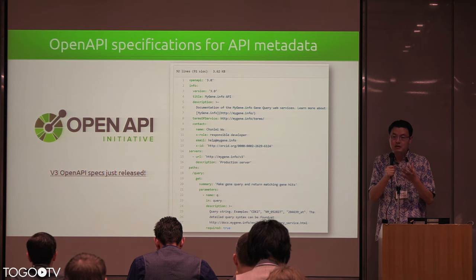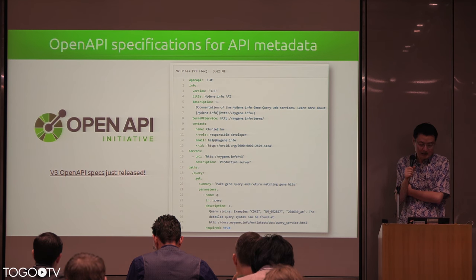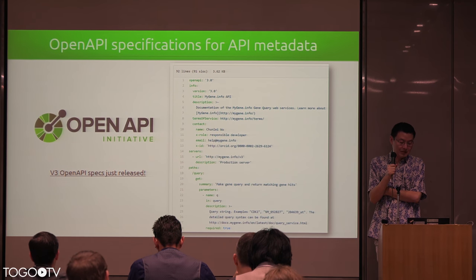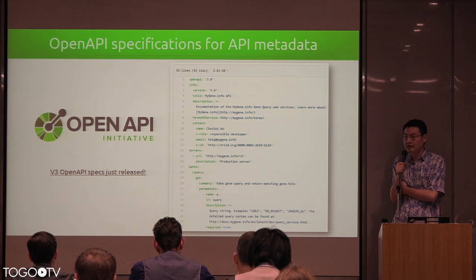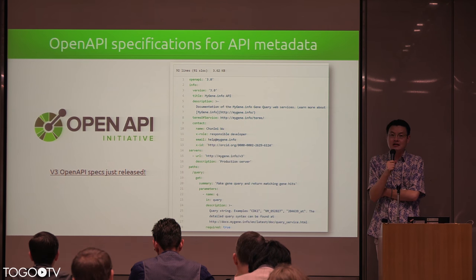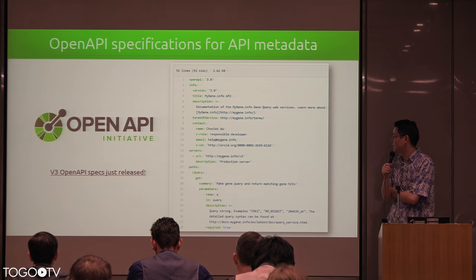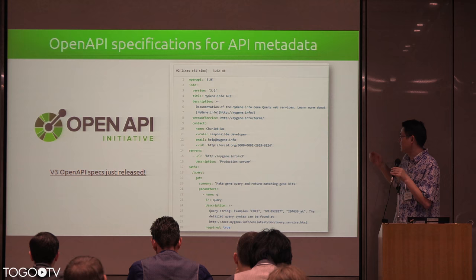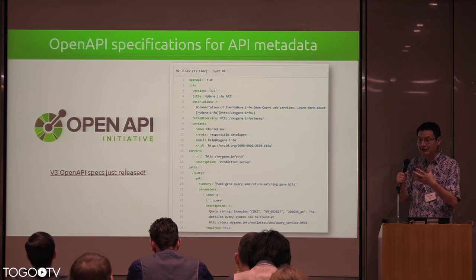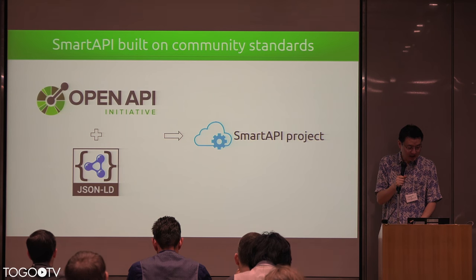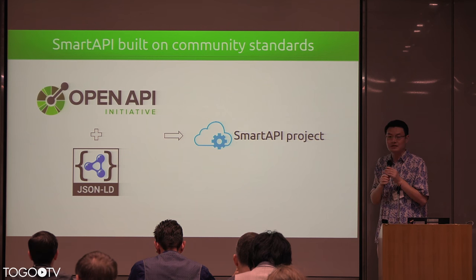The second thing is we want API metadata — telling us how your API is formulated, how to make the call, what the parameters are. There are many standards, and recently the whole informatics community — not just bioinformatics — has converged on the OpenAPI standard. They've released version 3 of the OpenAPI specs. You can use JSON or YAML format to provide all the information. Smart API is built on top of these two community standards: JSON-LD and the OpenAPI specifications.